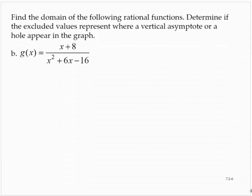So g of x is x plus 8 over x squared plus 6x minus 16. We want to see where the denominator takes the value 0. So we would have x squared plus 6x minus 16 is 0.